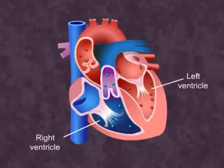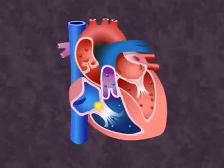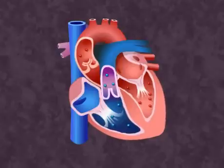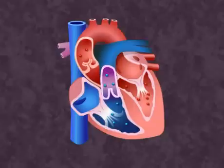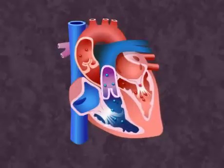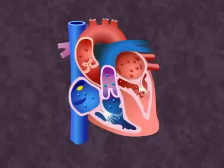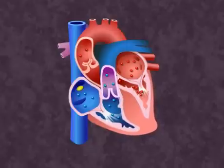Ventricular systole begins when the ventricles are filled with blood. The AV node, as shown here, picks up the signal and conducts it throughout the ventricles, stimulating ventricular contraction. As the ventricular contraction increases, the ventricular pressure causes the closure of the AV valves. This continued contraction causes a further increase in ventricular pressure.